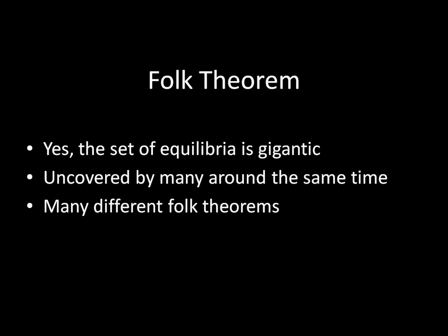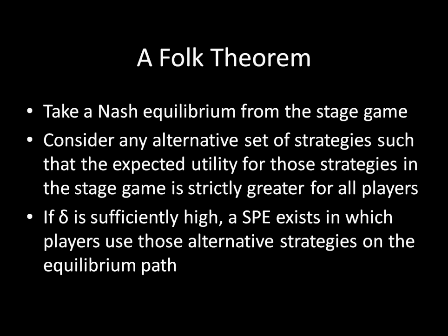So here is a Folk Theorem for you. Let's start out by taking a Nash Equilibrium from a stage game. We have a stage game that is going to be infinitely repeated over time. We're going to have discount factors, so we are discounting the future, but we're playing this single game every single period. This game is going to be a finite game, so it has a Nash Equilibrium — it's finite in the stage but infinitely repeated. We're going to think about one of those Nash Equilibria.